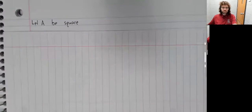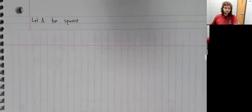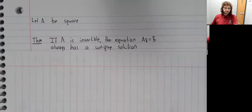Let's state some theorems involving inverses. In all of these theorems, A is going to be a square matrix. Otherwise, we can't talk about A having an inverse.